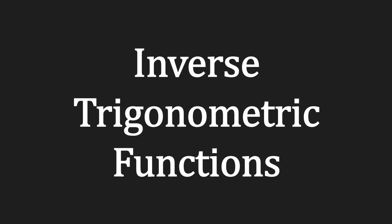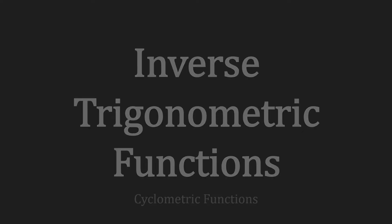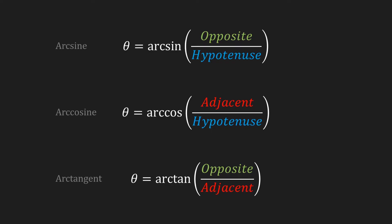To understand why this calculation is useful, we'll have a look at the inverse trigonometric functions, also referred to as the cyclometric functions. So what are those inverse trigonometric functions? Well, it is the arcsine, the arccosine, and the arctangent. These three functions return the angle of a triangle based on the ratio of the lengths of two sides of that triangle.